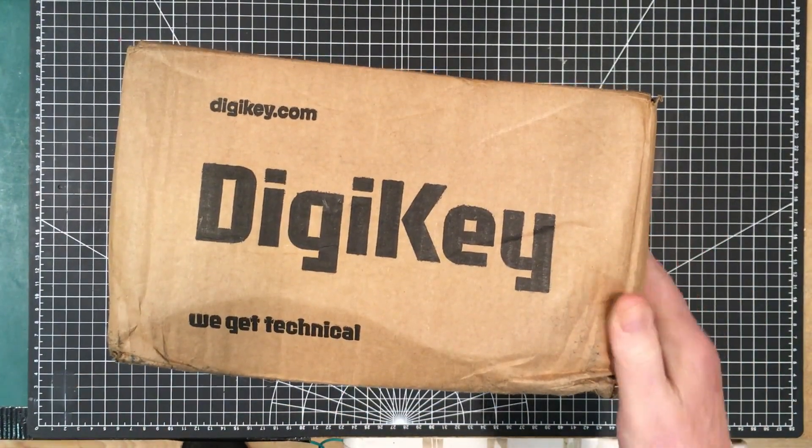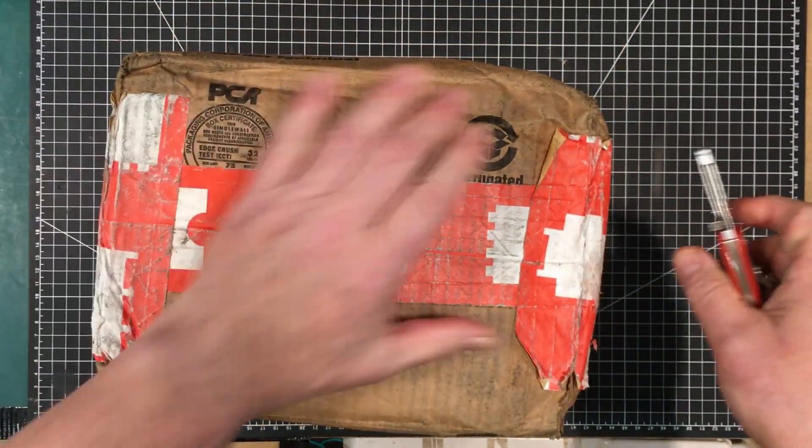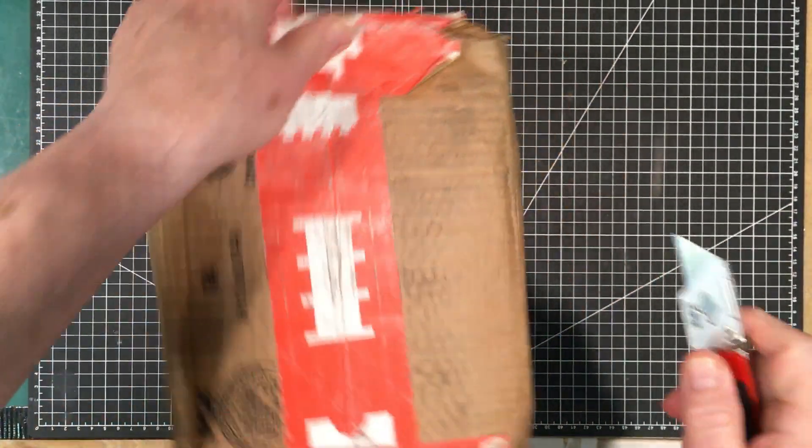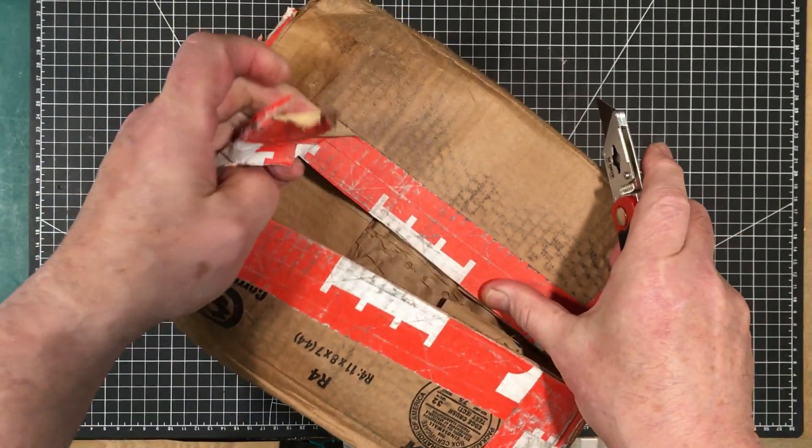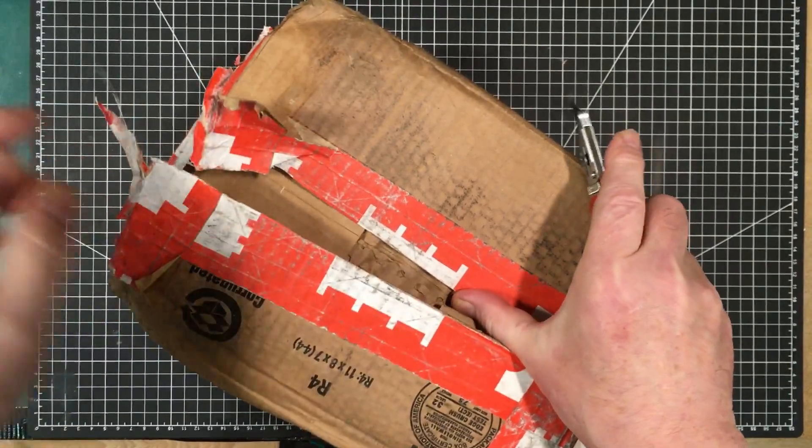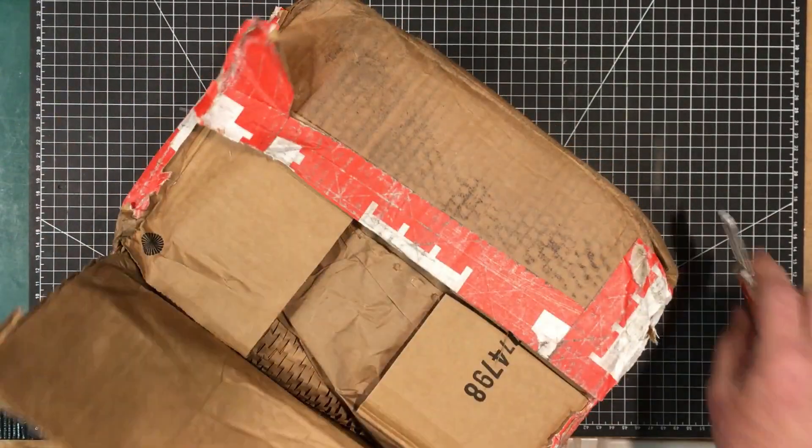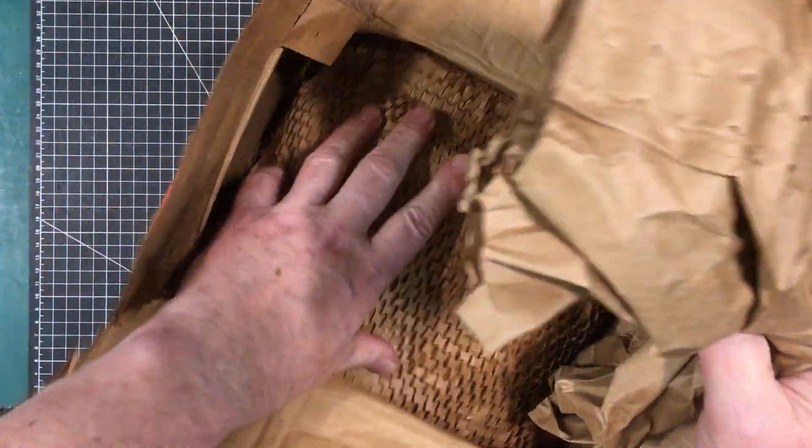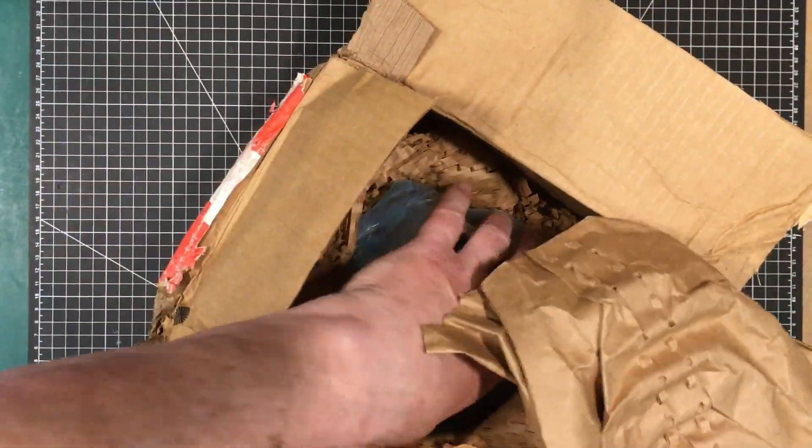This came in from Digikey here. I believe this is the new transformer. Trying not to show any labels or stuff like that. Apparently, I'm not good at blocking them out. Not that I really mind if somebody knows where I live. Just other people get upset at it. And I don't know, there might be some rules about it that I'm not aware of. Anyway, I love Digikey's packing.